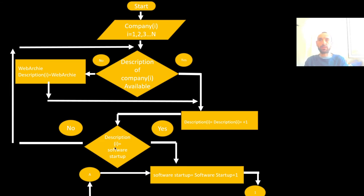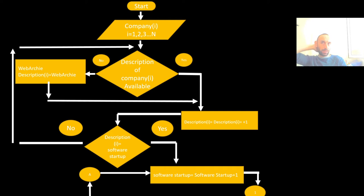From these descriptions, we apply a filter: is this description from a software startup? Because we want to collect only software startups — we don't care about hardware startups or other types. If yes, we increment a software startup counter: software_startup = software_startup + 1.